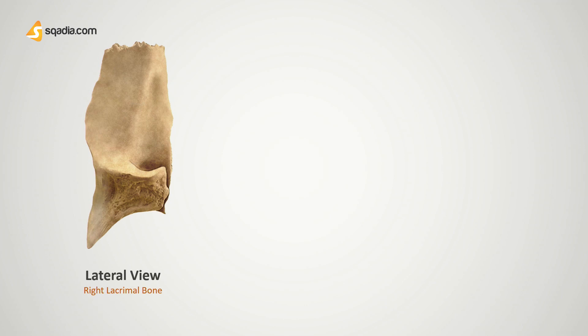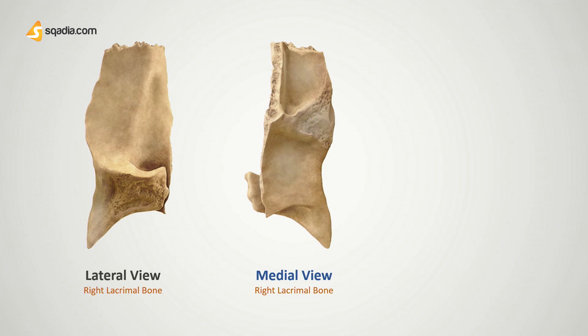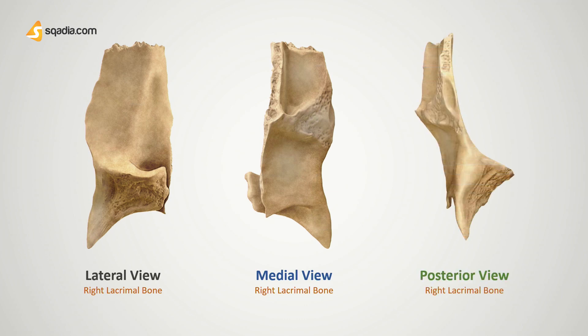Here we can see the lateral view of the right lacrimal bone. The lateral view can be called the side view as well. Then we have the medial view, which is towards the midline of the body — always remember medial and midline, that's how you can remember this. Lastly we have the posterior view, which is described as the view from the back.